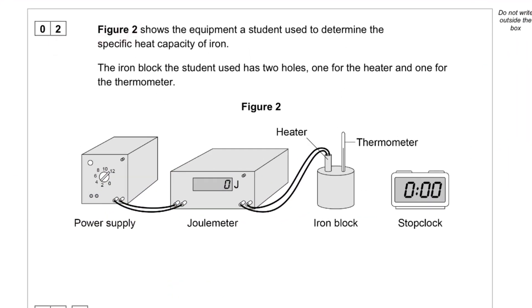Question 2. Figure 2 shows the equipment a student used to determine the specific heat capacity of iron. The iron block the student used has two holes, one for the heater and the other one for the thermometer.